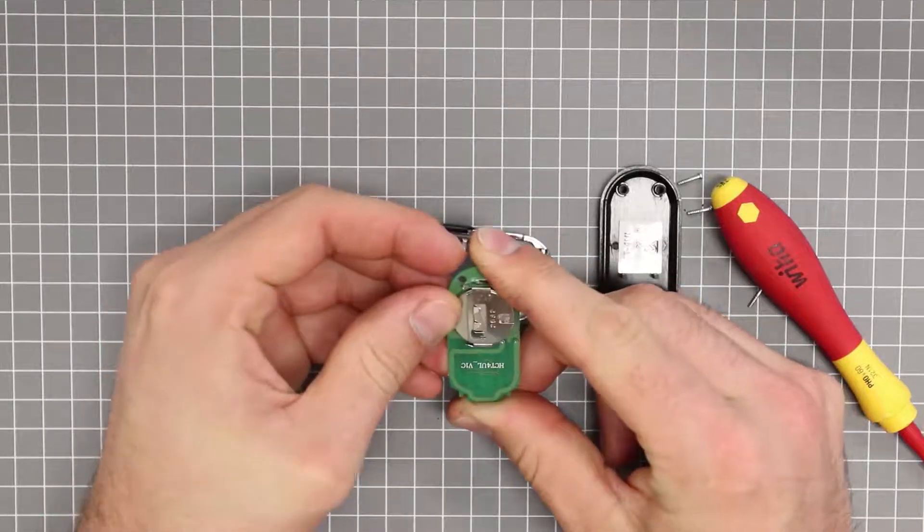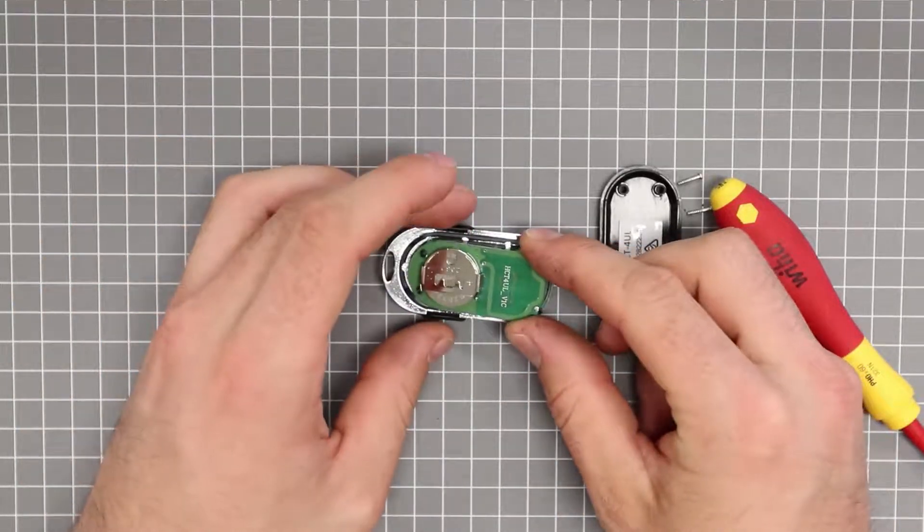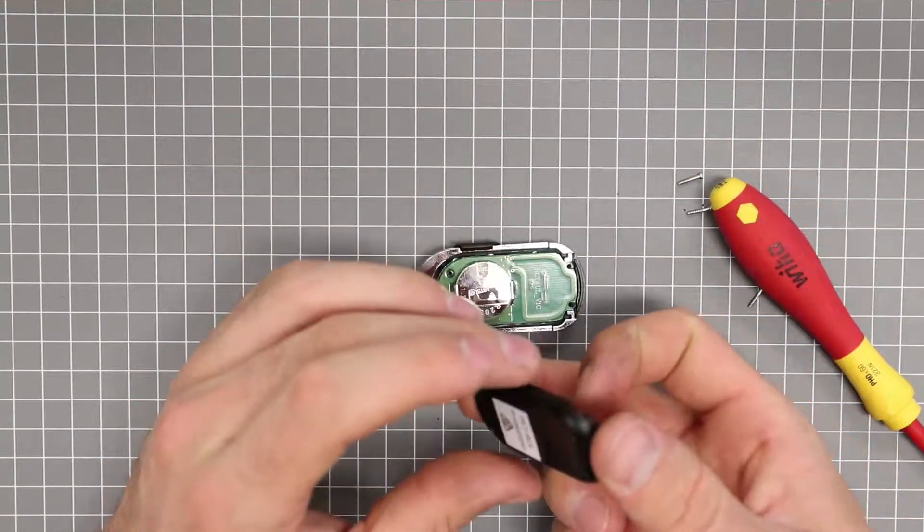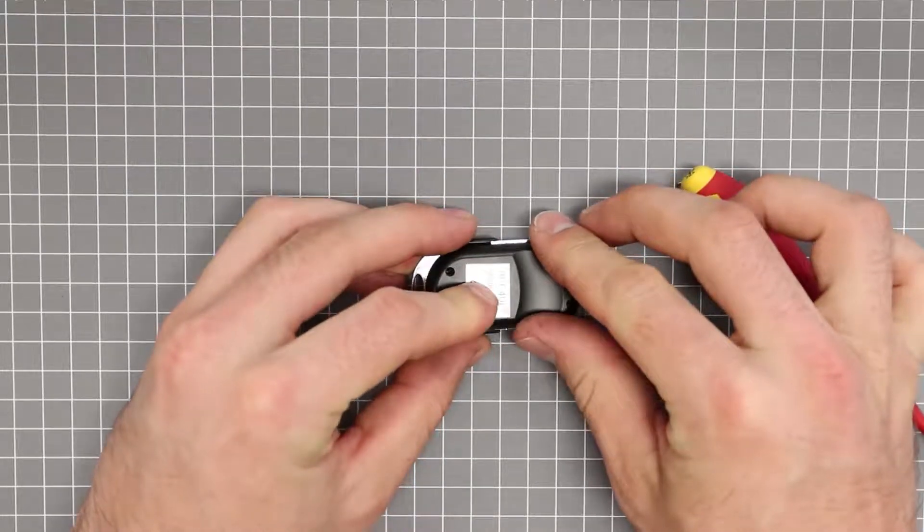Install the new battery making sure it is orientated correctly. On this particular model it is positive up. Place the green board back inside the remote body making sure it is lined up with the button pad.